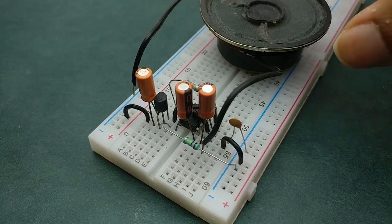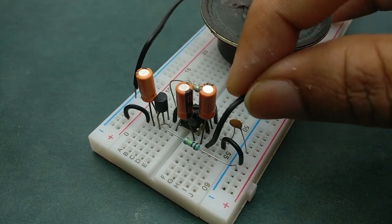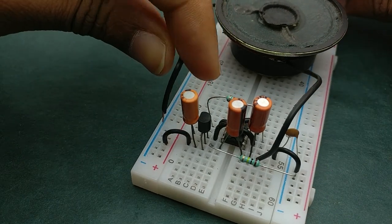Next connect a speaker preferably of 8 ohms between the positive rail and the common point between the two 10 microfarad capacitors.